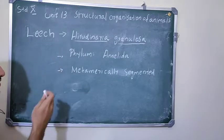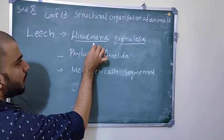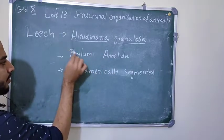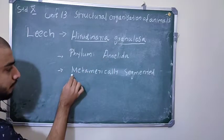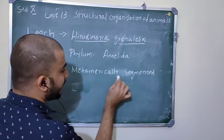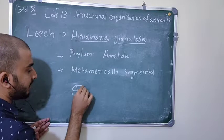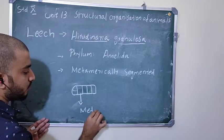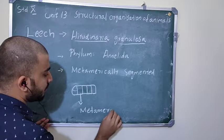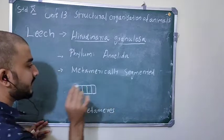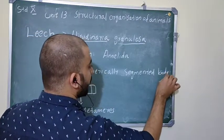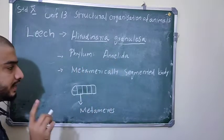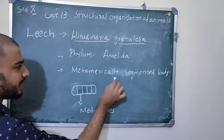Now, general information about leech. The scientific name of leech is Hirudinaria granulosa. When writing a scientific name, each part should be underlined separately. Leech comes from Phylum Annelida. An important point to remember: they are metamerically segmented. If you take the leech body, you can see it is divided into segments, and each segment is called a metamere. This is a characteristic feature of Phylum Annelida.